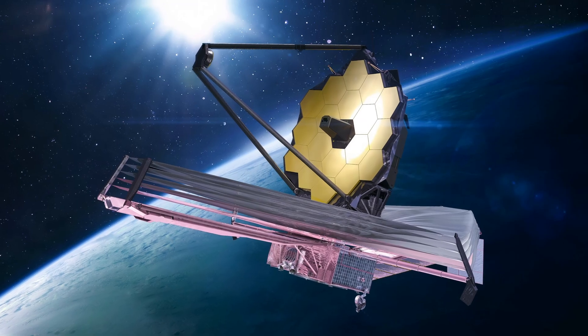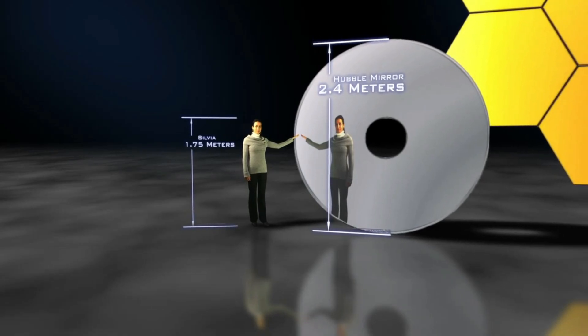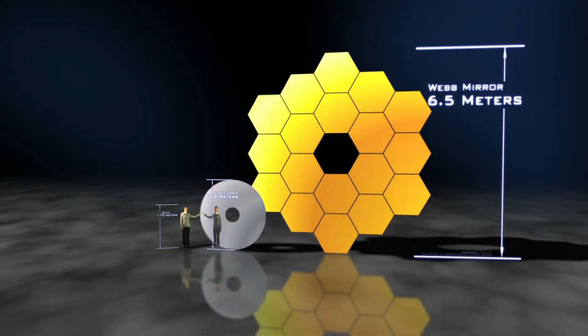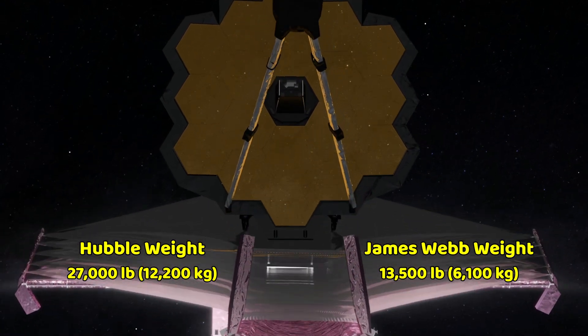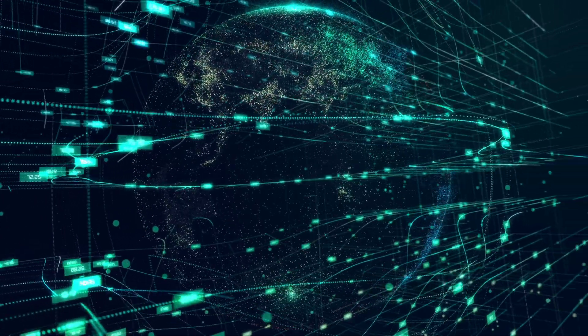This is because James Webb is 100 times better than Hubble and its primary mirror is almost 3 times larger than Hubble's primary mirror, and still James Webb weighs only half as much as Hubble, where Hubble weighs about 27,000 pounds after upgrades, and James Webb weighs only 13,500 pounds thanks to the advancements in science and technology.